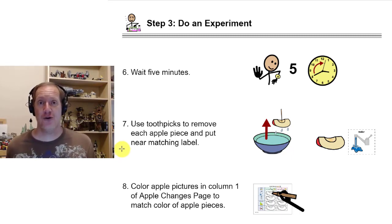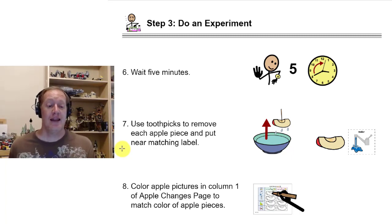Step six, now we have to wait five minutes. After those five minutes are up, we need to use a toothpick to remove each apple piece and put it near the matching labels. Put the apple from the water bowl next to the water label and so on and so forth for all four apple pieces. Now take your page and color the apple pictures in column one of the apple changes page to match the color of apple pieces. Let's stop here and watch the experiment in action for the first five minutes and see what the apples have done after five minutes.